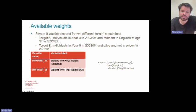Weights to restore sample representativeness have been created for each sweep and are supplied with the data. These account for both the design of the survey and attrition from it. Unlike for previous sweeps, for Sweep 9 we have supplied two weights, reflecting two separate target populations.